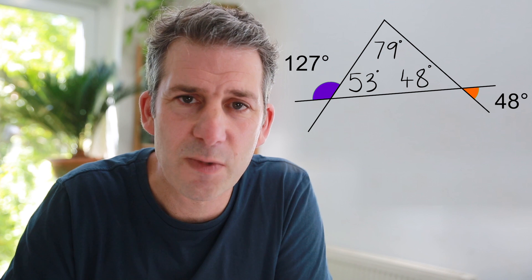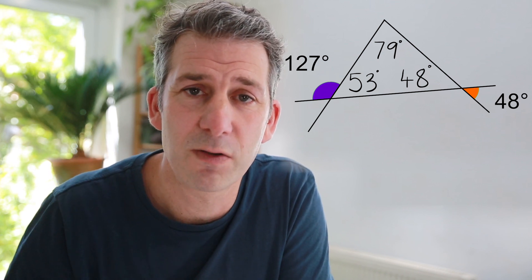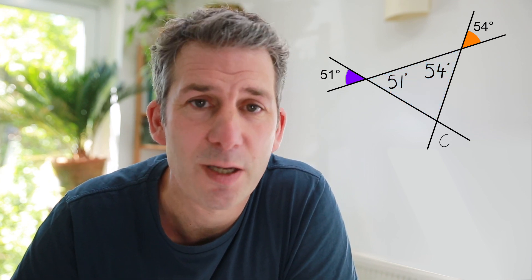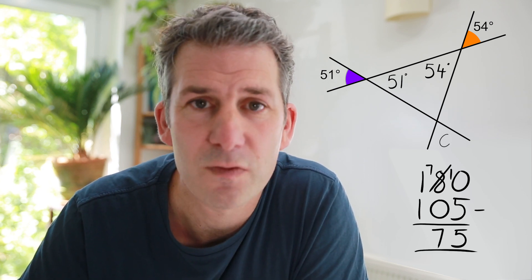I'm going to give you another similar question to have a go at on your own — pause the video and I'll talk you through it in a couple of seconds. Angle A is vertically opposite that 51 degrees, so angle A is 51 degrees. Angle B is vertically opposite that 54 degree angle, so angle B is 54 degrees. The angles in the triangle add up to 180, so 51 add 54 add the missing angle equals 180. 51 add 54 is 105, and 180 minus 105 is 75 degrees. That's the missing angle in the triangle, and angle C is vertically opposite that, so angle C is also 75 degrees.